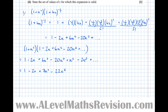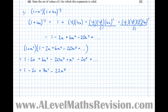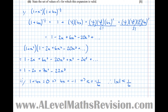The next part asks us to state the set of values for which the expansion is valid. We solve the bracket equal to 0: 1 + 4x = 0, so 4x = −1, so x = −1/4. Therefore, putting a modulus sign around the x and turning the right-hand side positive: the modulus of x is less than 1/4.